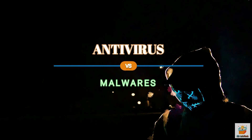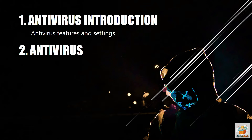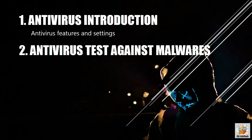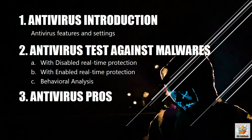In this video, we will talk about antivirus introduction, test on malware, and pros and cons. In the first section, we will discuss the features and settings of the antivirus. In the second section, we will perform an antivirus test on different malware samples. First test after disabling real-time protection, second test after enabling real-time protection, and third test is behavioral analysis test. And in the last section, we will talk about the pros and cons of the antivirus, on the basis of test performed and features provided.